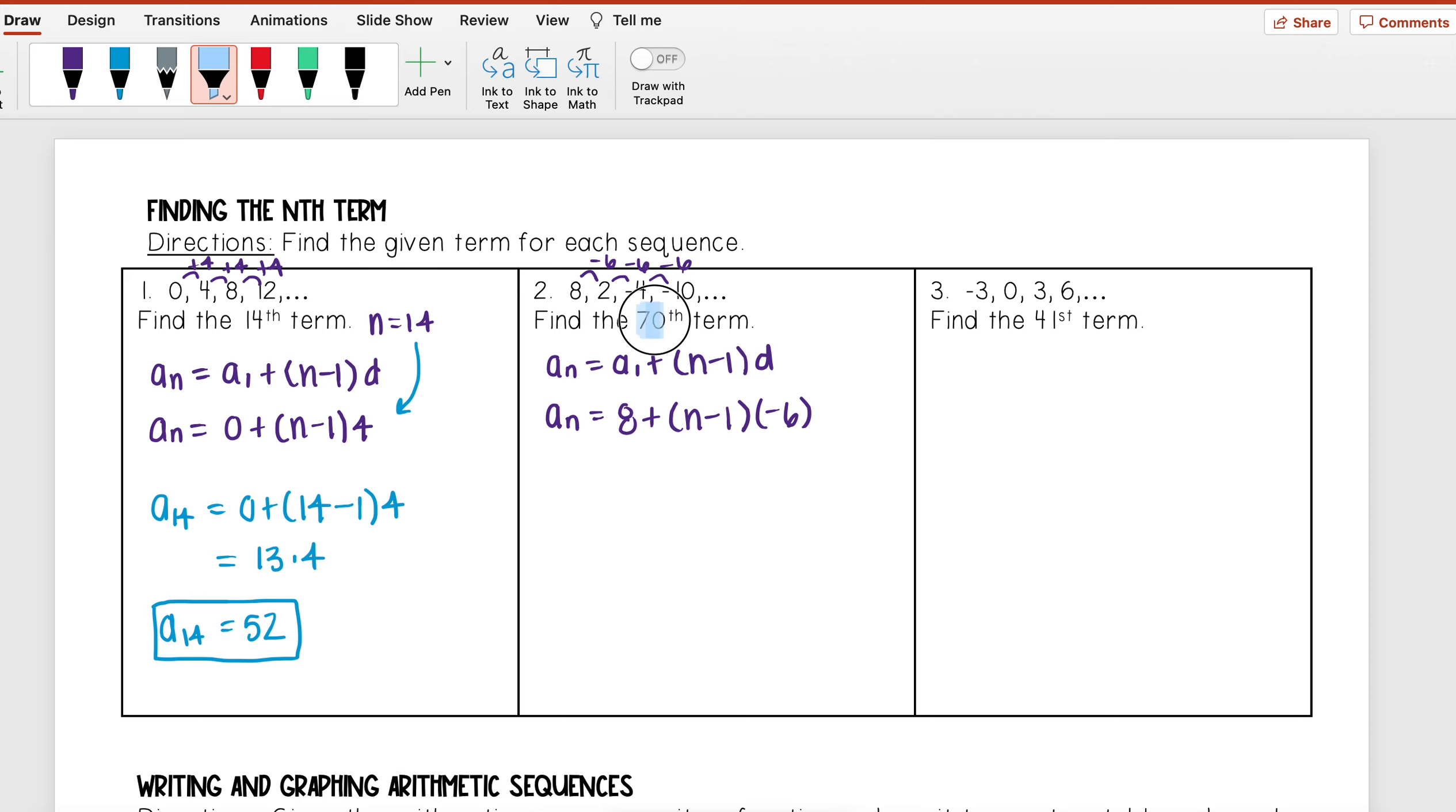And it's asking me to find the 70th term, so since I'm looking for the 70th term that means n is equal to 70. So I'm going to replace my a_n with a_70 to stand for 70th term.